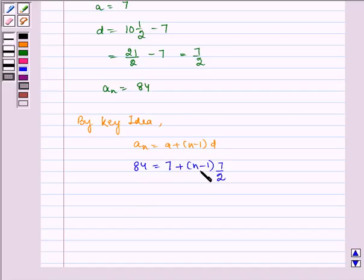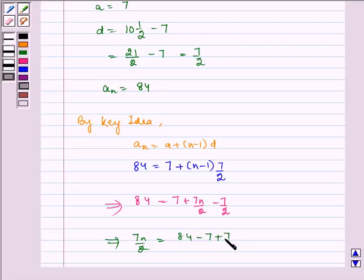Here there is one unknown, that is n, so we will find this. So here we get 84 equals 7 plus 7n/2 minus 7/2, which implies 7n/2 equals 84 minus 7 plus 7/2.